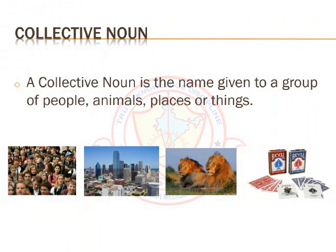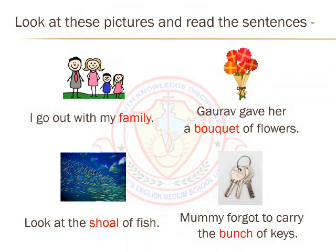Collective noun. A collective noun is the name given to a group of people, animals, places or things. Look at these pictures and read the sentences. I go out with my family. Gaurav gave her a bouquet of flowers. Look at the shoal of fish. Mummy forgot to carry the bunch of keys. In the sentences given above, the words family, shoal, bouquet and bunch describe a group of people, flowers, fish and keys. These are called collective nouns.